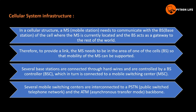In the cellular structure, MS (mobile station) needs to communicate with the BS (base station) of the cell where the MS is currently located. The BS acts as a gateway to the rest of the world. The MS communicates to the BS, and the MS needs to be in the area of one of the cells, so the mobility of the MS can be supported.